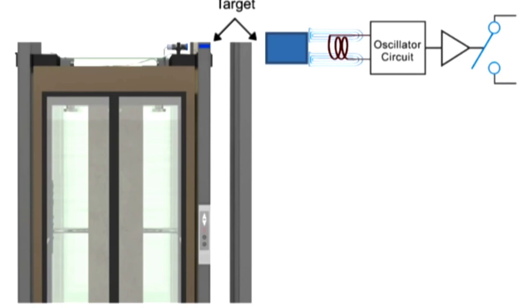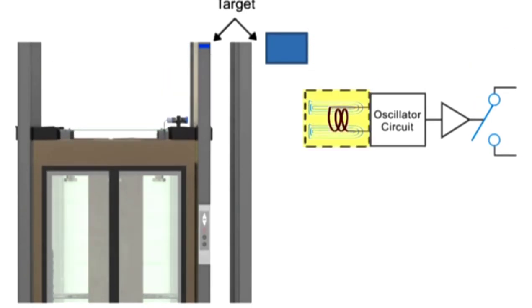When the metal target is removed from the sensor's range, the oscillator will return to its normal amplitude and the switch will return to its normally open or closed output.